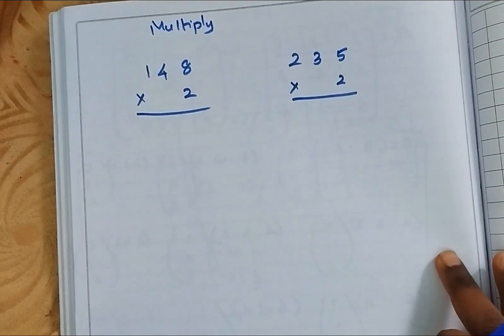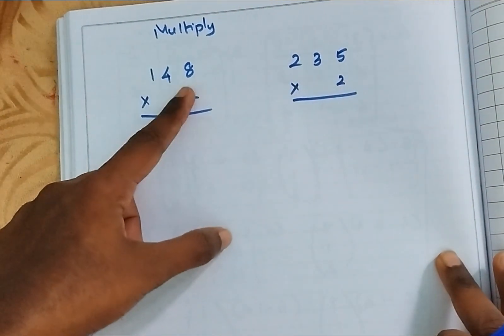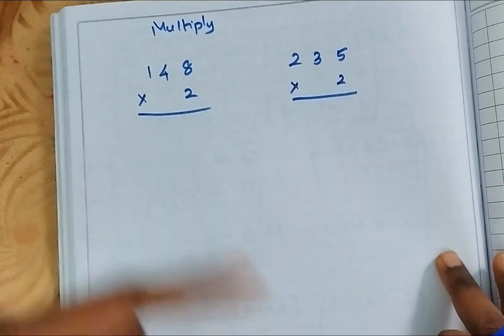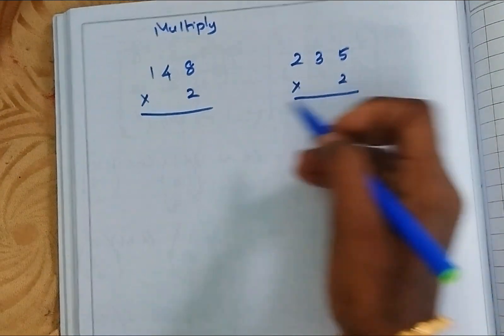Hello students, today let's multiply with 3 numbers. Here 3 numbers but here only 1, so with 2 table. You are thorough with 2 table, right?